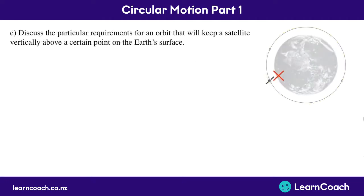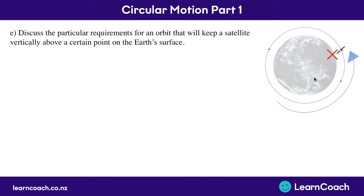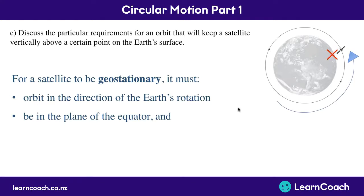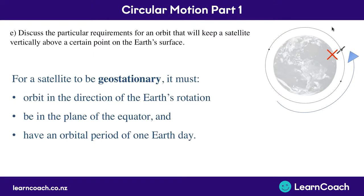For the final question, we need to discuss the requirements for an orbit that keeps a satellite vertically above a fixed point on the Earth's surface — a geostationary orbit. The satellite must orbit in the same direction as the Earth rotates. It must be on the plane of the equator, as that's the only part of the Earth that spins in a full circle. And it must have an orbital period of exactly one day, matching the Earth's rotation. That's circular motion for orbiting objects.